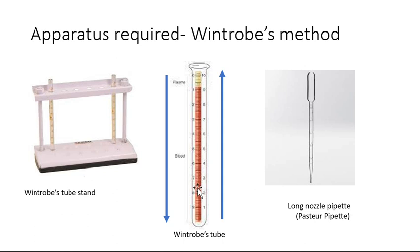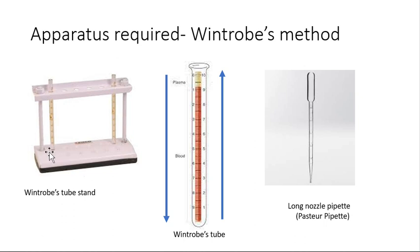The apparatus for the Wintrobe method includes the Wintrobe tube. You can see markings on both sides of the tube — the direction of markings varies: 0 to 10 downward on one side and 0 to 10 upward on the other. The downward marking is for ESR and the upward marking is for PCV. Other apparatus includes the Wintrobe tube stand, which holds the tube in an erect vertical position, and a long nozzle Pasteur pipette — a needle can also be used.